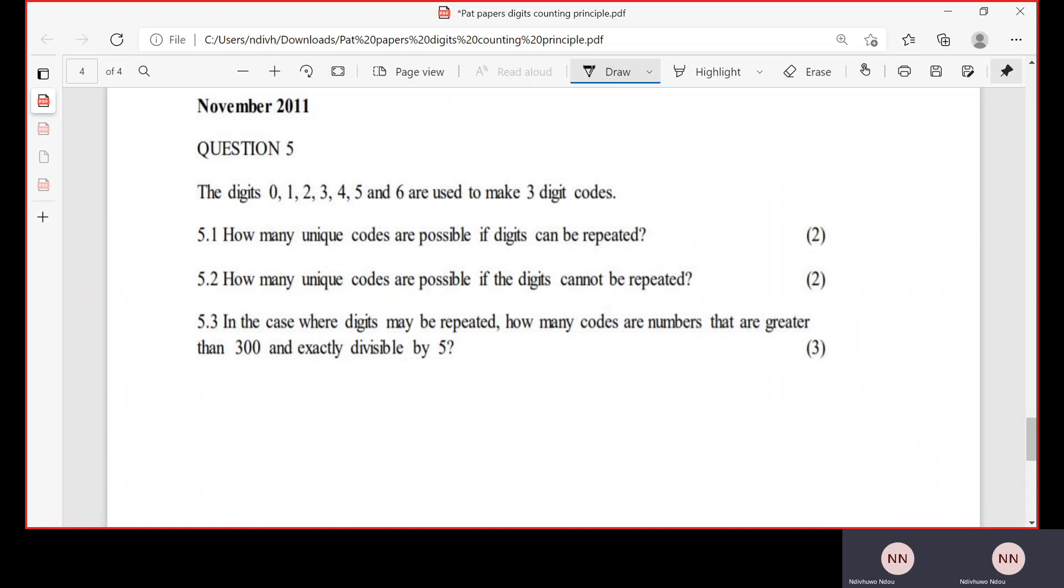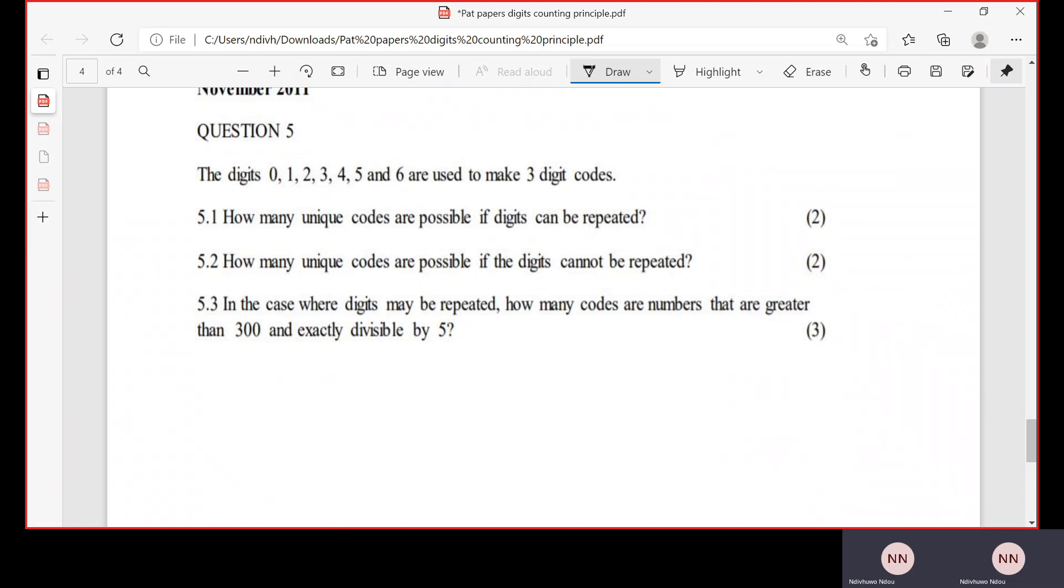It says the digits 0, 1, 2, 3, 4, 5, and 6 are used to make a three-digit code. That's an important statement. So they're using the digits 0, 1, 2, 3, 4, 5, 6. How many unique